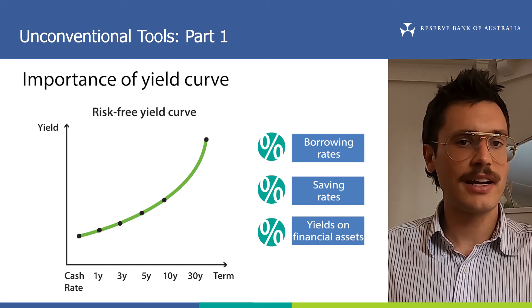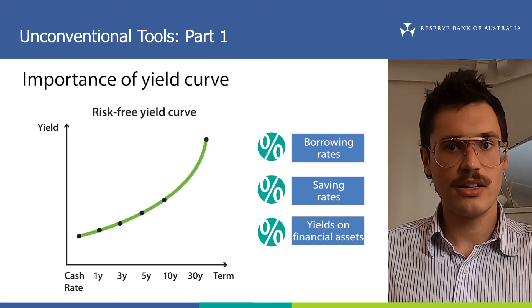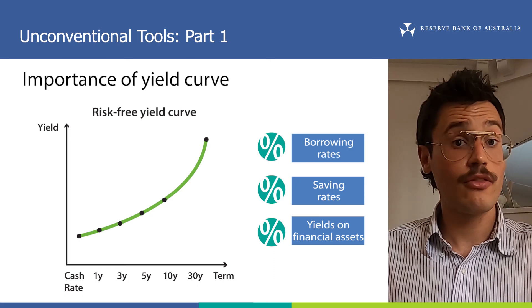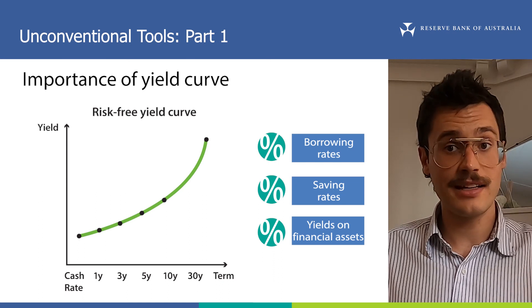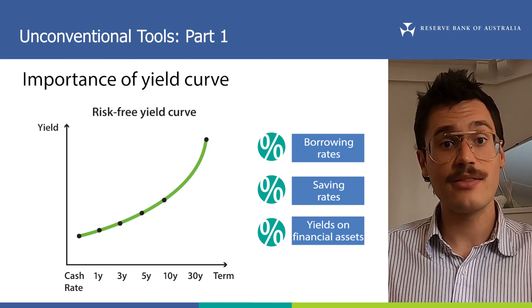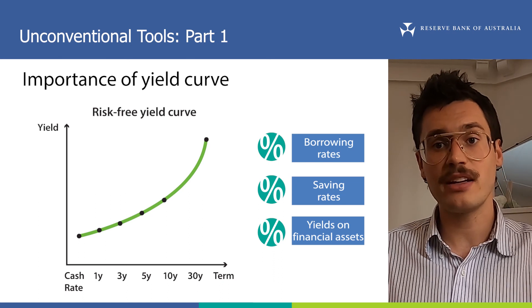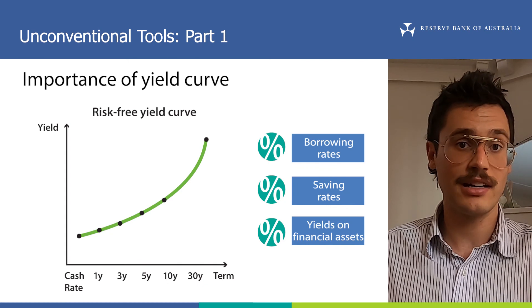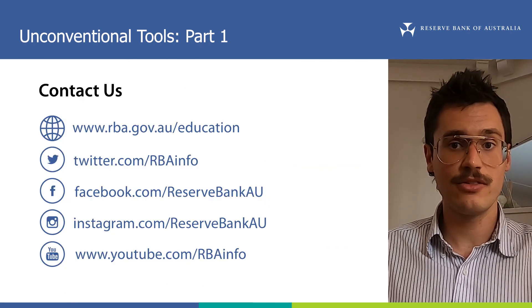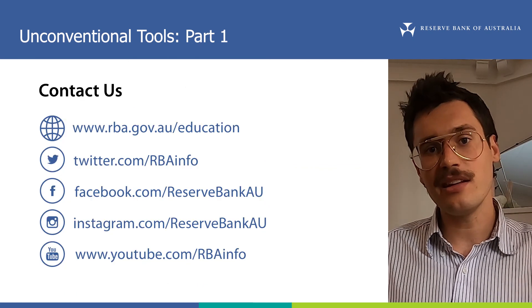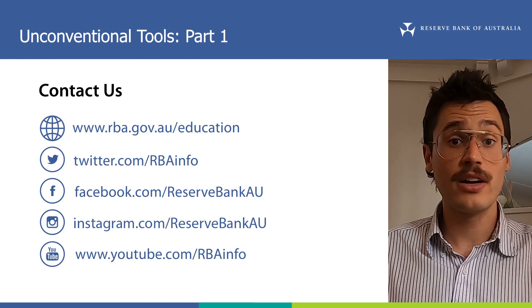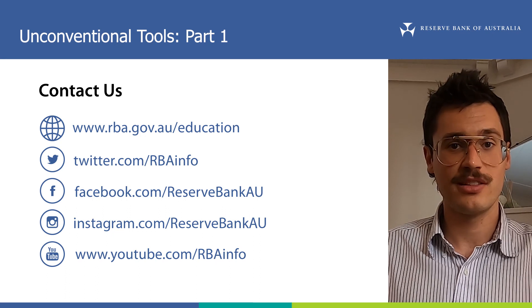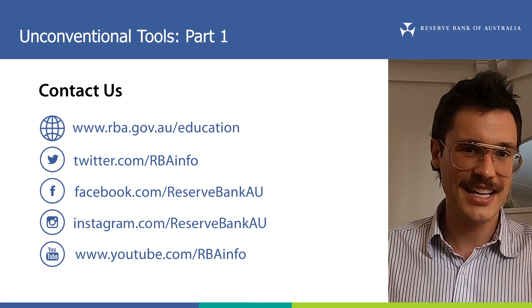So that's all we're going to cover in this video. What I want you to take away is that in the end, forward guidance and asset purchases have a similar effect on interest rates as lowering the cash rate target — they just work a little differently. In the next video we'll look at our other unconventional monetary policy tools. See you next time.